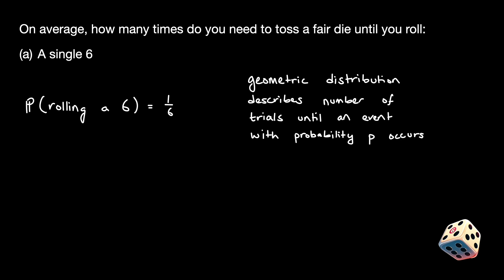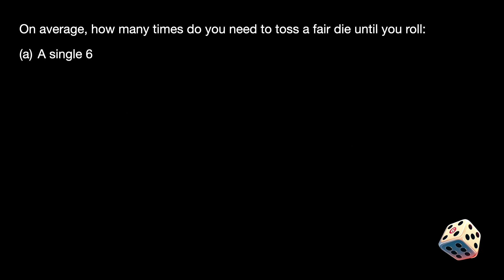Thus, if we use a geometric distribution with probability one-sixth, we get that the expected number of rolls is simply six. This may seem like a very easy answer to a trivial problem. However, I challenge you to solve it in a second way. This will become much more useful when we attempt part B.